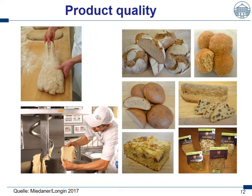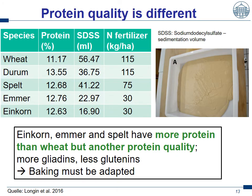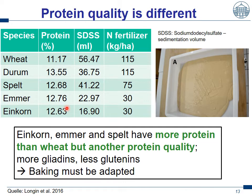That was all about milling. Let's go to product quality and what is important to care about to realize products that are acceptable — or even better than acceptable — for the consumer. First, when we discuss about wheat, the protein amount and quality. As shown a few slides ago when we looked at nitrogen use efficiency, the protein content of spelt, emmer, and einkorn is higher than that of bread wheat. And when we take into account that protein content is directly linked to nitrogen fertilization, and that we fertilized much less nitrogen on emmer and einkorn than bread wheat, we see that spelt, emmer, and einkorn have a potential to form large amounts of proteins.